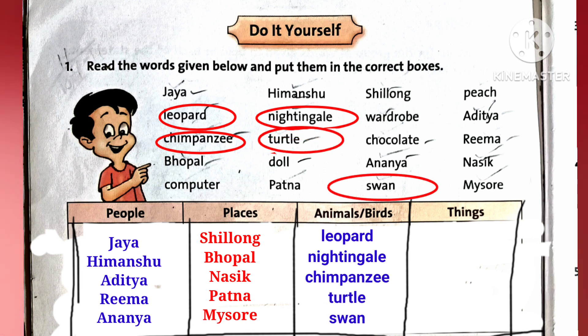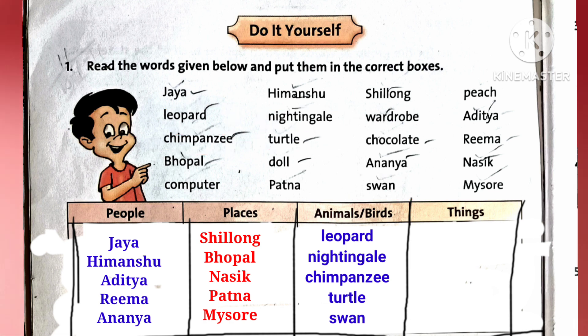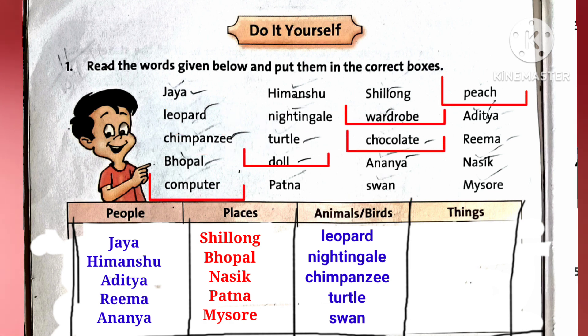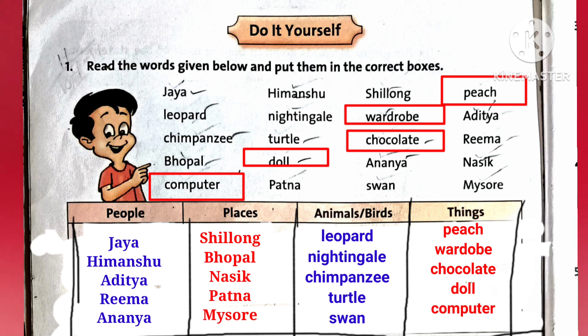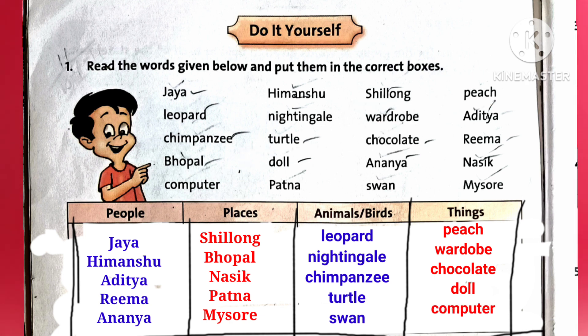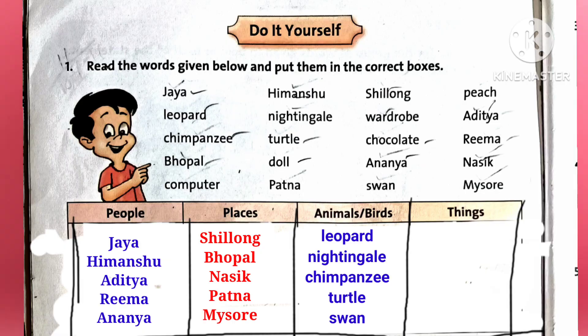Now the things: Peach, Wardrobe, Chocolate, Doll, Computer. In this manner you have to arrange number 1.